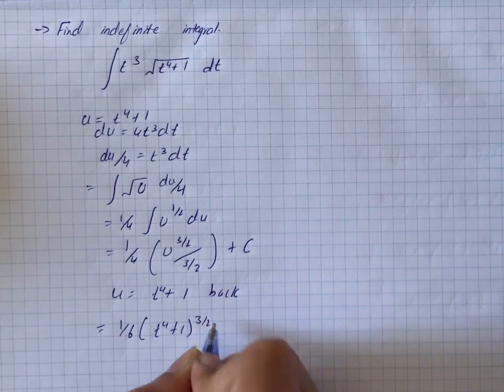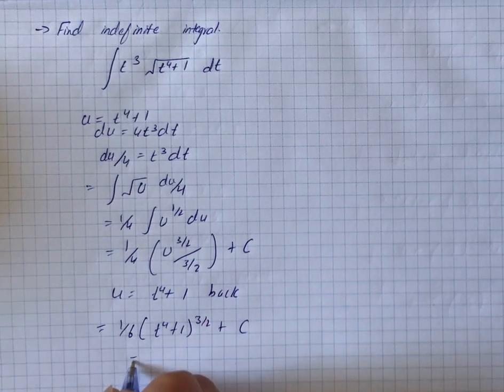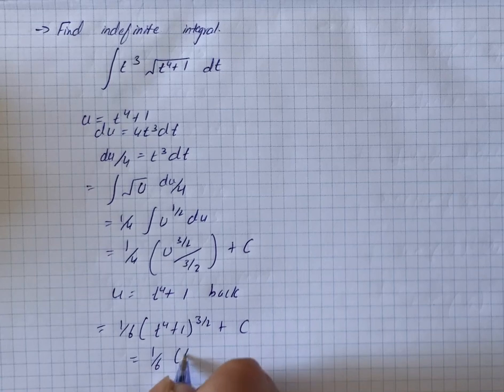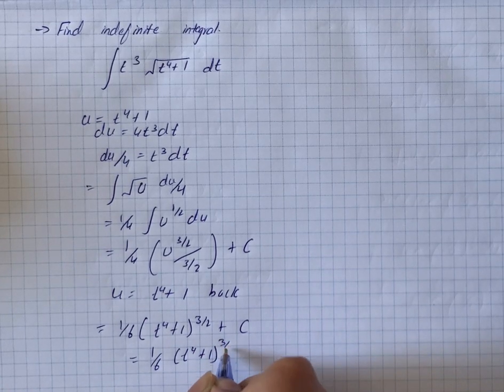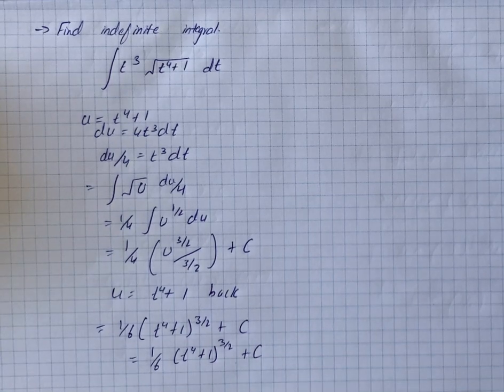So we have 1 by 6 into t⁴ plus 1 raised to power 3 by 2 plus c as our solution.